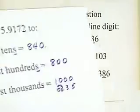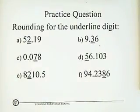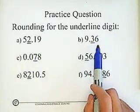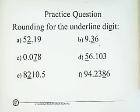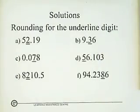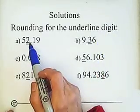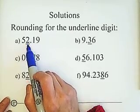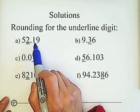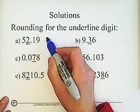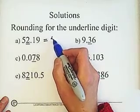Now it's your turn for some practice. Rounding for the underlined digit. After practicing, you can check your answer from our solutions. For the first problem: the underlined digit 2 on the left side of the decimal point is the ones place. Check the right side of the rounding digit — 1 is less than 5 — so drop it. The answer equals 52.